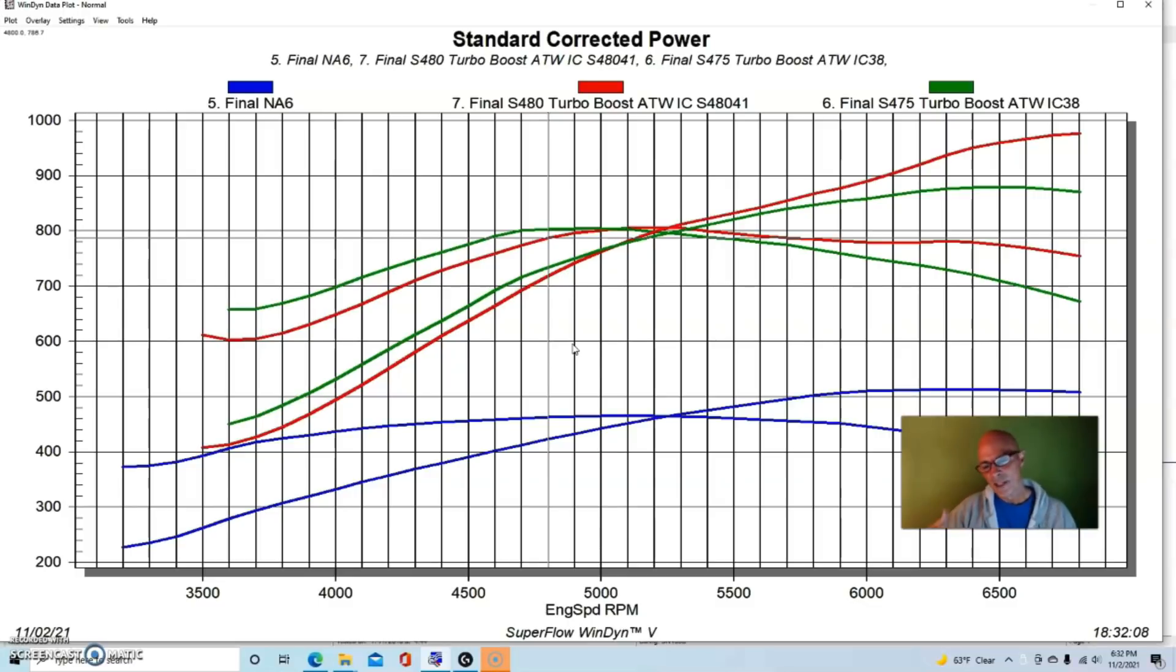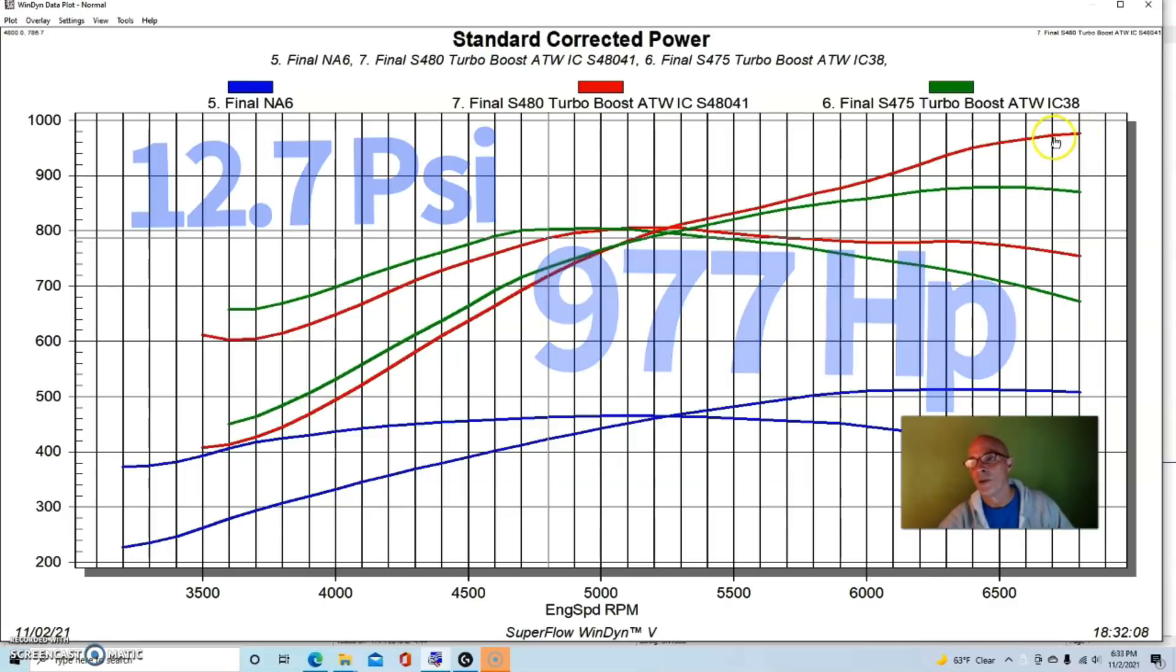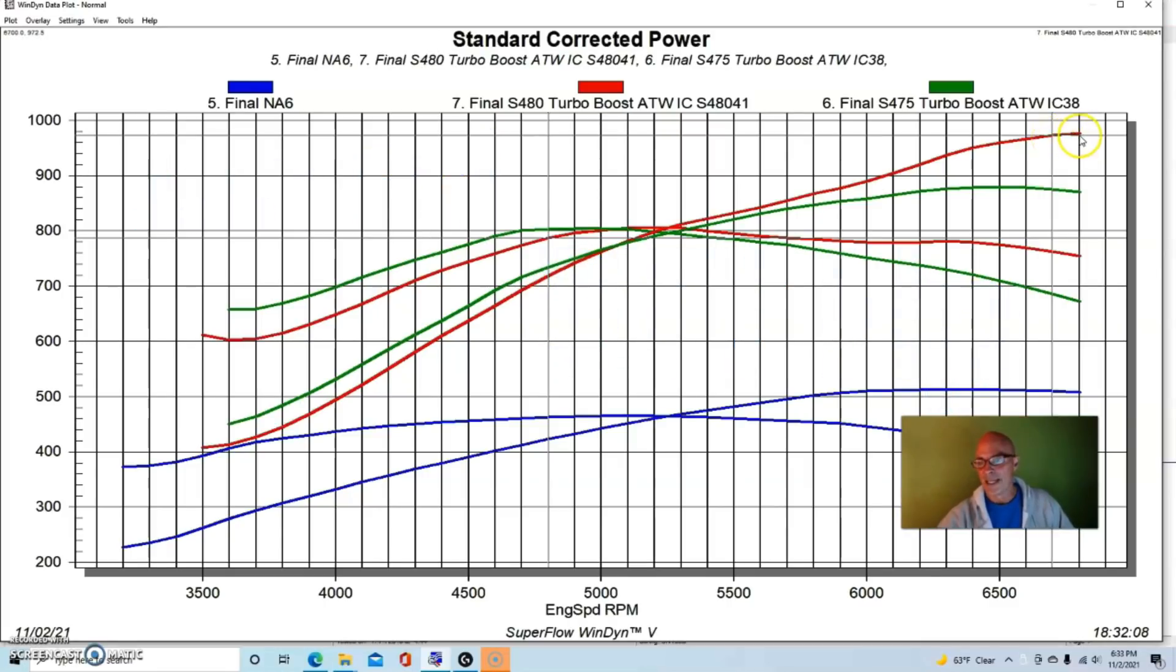But this really isn't about that. This is more a discussion on we had our NA motor, made lots of power when we added a turbo. In fact, we were up near a thousand horsepower with the S480, but it was at like 12 and a half or 12.7 pounds. We were up near 980 horsepower. Peak torque was 807 foot-pounds or so. Both the turbos did very well with lots of power left in them.